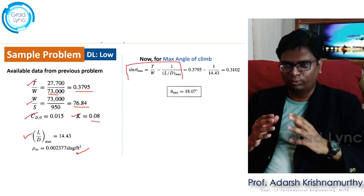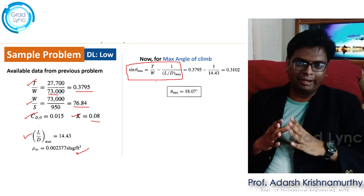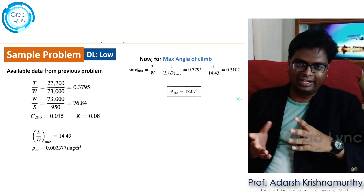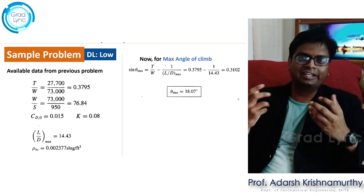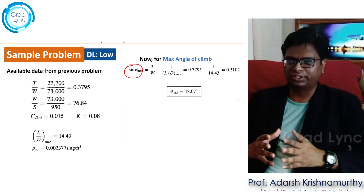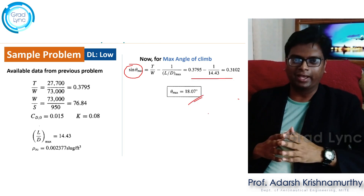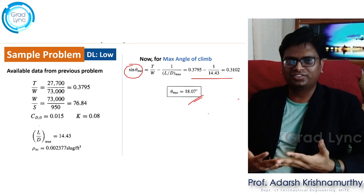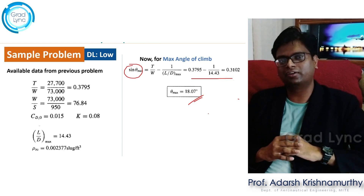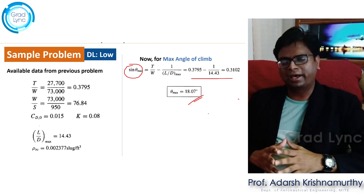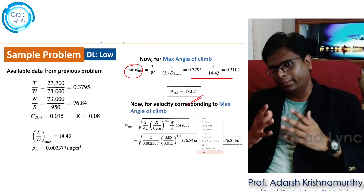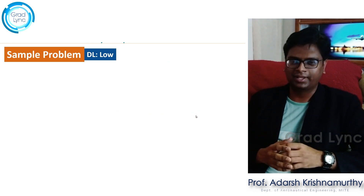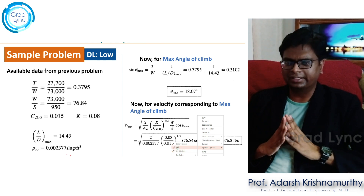To calculate the maximum angle of climb, we use: sin(θ_max) = thrust-to-weight ratio minus 1/(L/D_max). The sine will be maximum when L/D is maximum — because when L/D is maximum, 1/(L/D_max) is minimum, so thrust-to-weight ratio minus that minimum value gives the maximum angle of climb. Substituting all known values, we get the maximum angle of climb as 18.07 degrees. This means the aircraft cannot fly beyond this angle of climb — it is the maximum the aircraft is capable of.